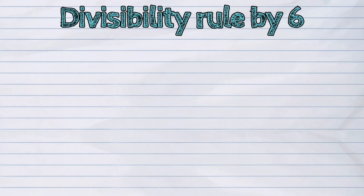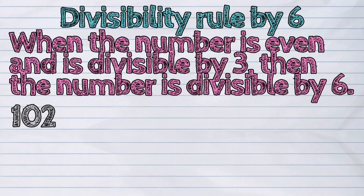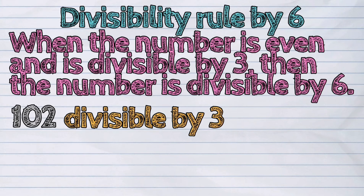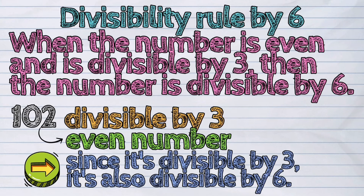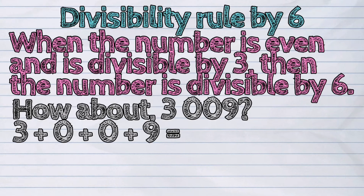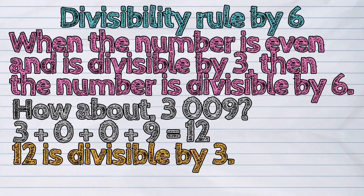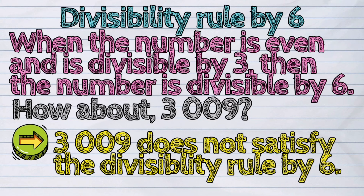Divisibility rule by six: when the number is even and is divisible by three, then the number is divisible by six. In our previous example, 102 is divisible by three and is also an even number, so it is divisible by six. How about 3009? Three plus zero plus zero plus nine equals twelve. Twelve is divisible by three, but the digit in the one's place, which is nine, is not an even number, so 3009 does not satisfy the divisibility rule by six.